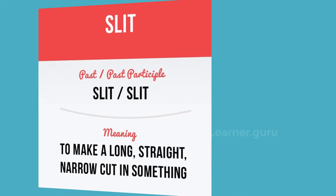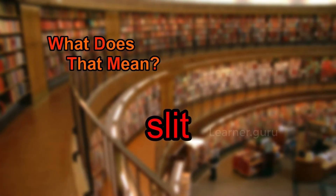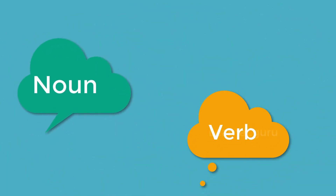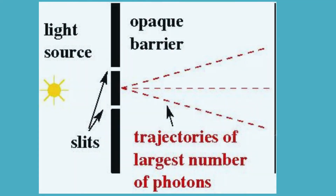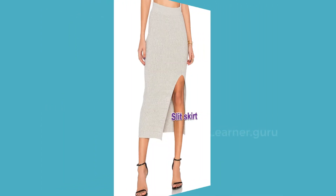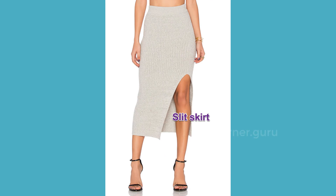Today we learn the word 'slit.' Slit is a noun and a verb. To slit means to make a long cut or opening in something, and it is often followed by 'open.' It also means to cut into strips.